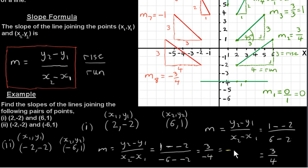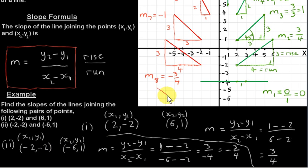You can put the minus sign wherever you like. So we get a negative slope, which means the line joining these two points is sloping down. As a matter of fact, it's the slope of this line here. This point has coordinates (-2, -2), which we called X1, Y1. And this point has coordinates (-6, 1). It comes out to be negative because the line is sloping down.